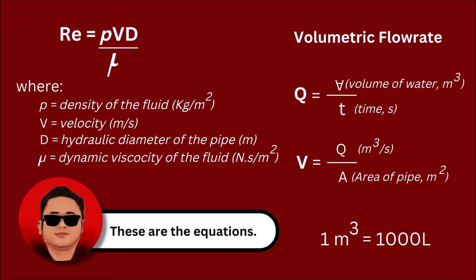These are the equations we are going to use. Reynolds number equals the density of the fluid multiplied by its velocity and the diameter of pipe, divided by the dynamic viscosity of the fluid. Remember, this is a unitless value.